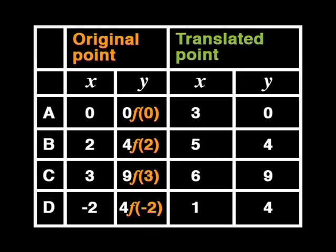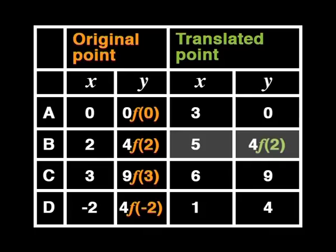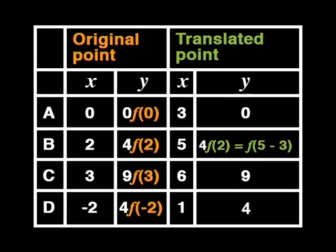Well, since the Y value of the translated points are the same as the original Y values, can't we just write down the same function notation? So, for example, instead of writing four for the Y value of the translated point B, I can write down F of two just like we did for the original point. Good thinking. But it won't quite work because that would give us a pair of coordinates five and F of two. And that makes sense. Yet, is it what we want? That gives me an idea. What if I wrote five, F of five minus three?